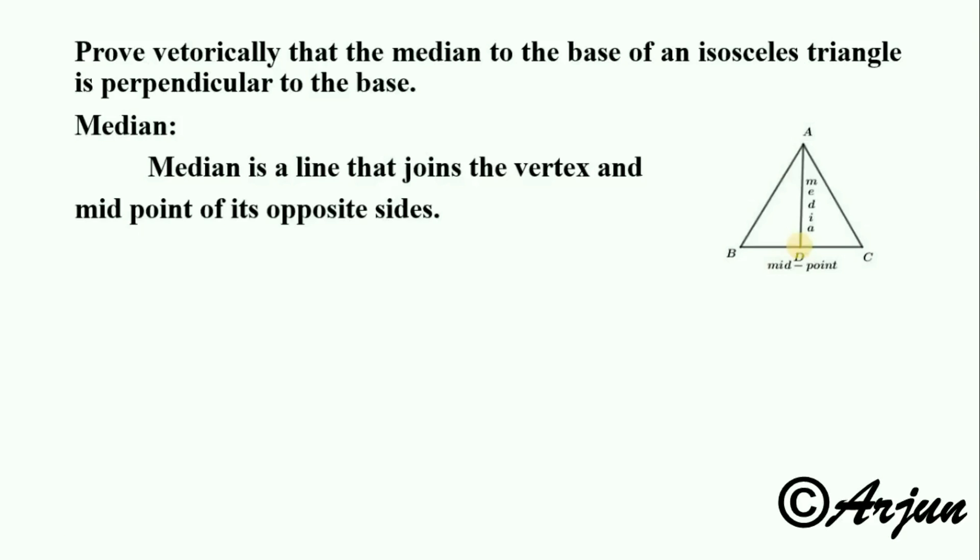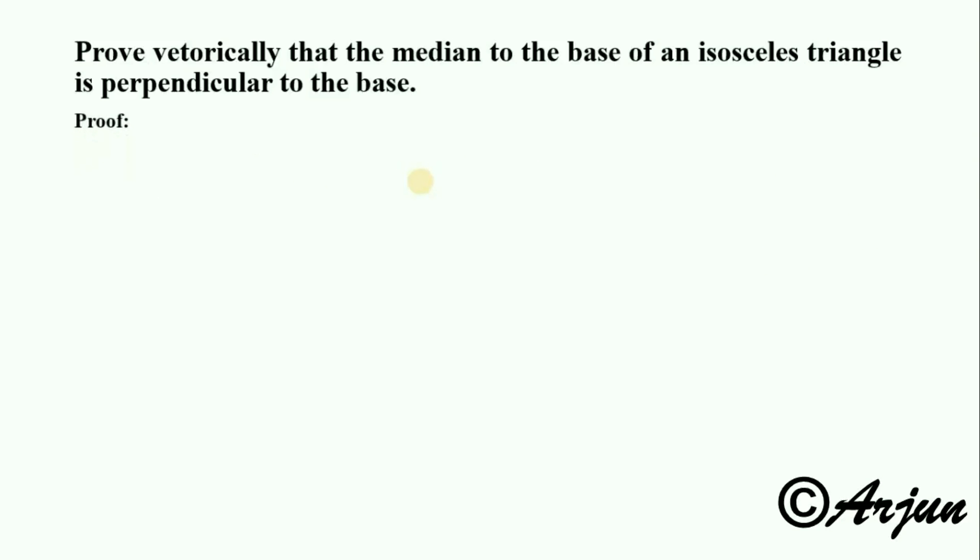The median is the line that joins the vertex and midpoint of the opposite side. In isosceles triangle ABC, we have AB equals AC, these sides are equal. The unequal side BC is the base.